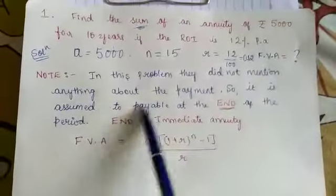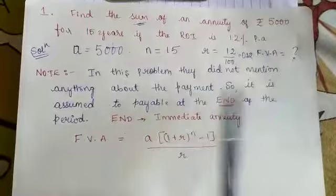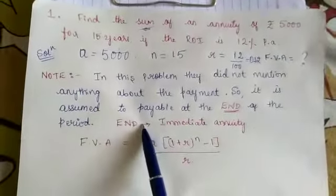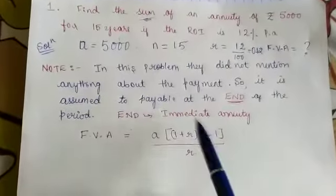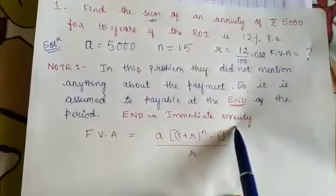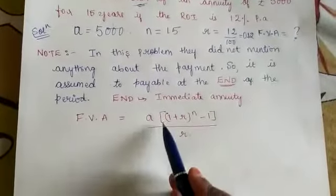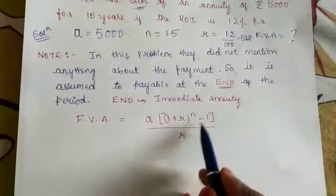In this problem they did not mention anything about the payment timing. So it is assumed to be payable at the end of the period. This is immediate annuity.